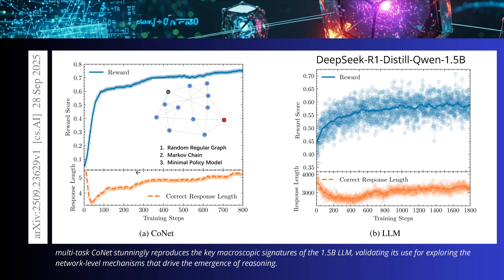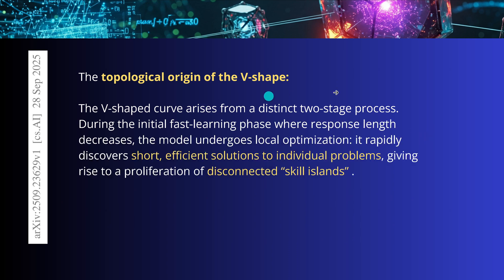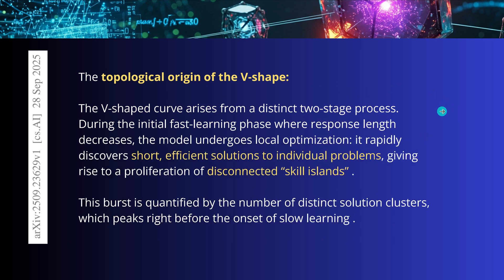Interestingly and stunningly, CONAT now reproduces the key macroscopic signatures of a DeepSeek R1 distilled Qwen 1.5 billion retrainable parameter model. Even the V-shape form and the response length are there. This simulation mimics exactly the behavior we want to learn from our LLM, but in a much simpler concept network. We have two signatures: a very steep reward that then plateaus out, and the V-shape evolution of the correct response length. There is a topological origin of the V-shape that is now explainable.